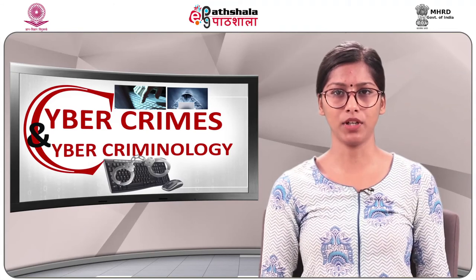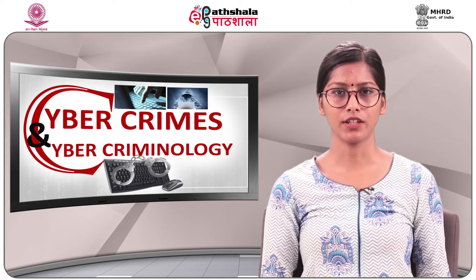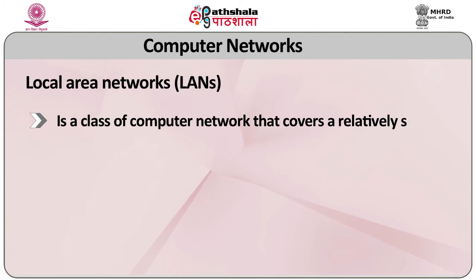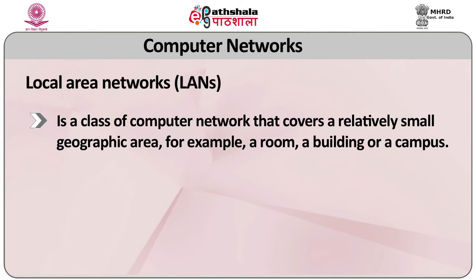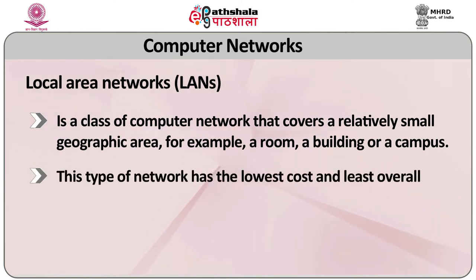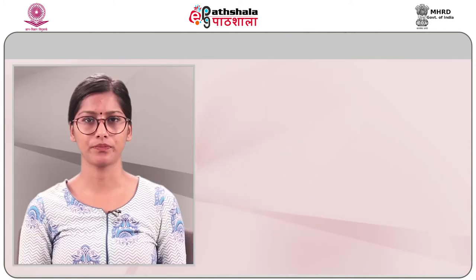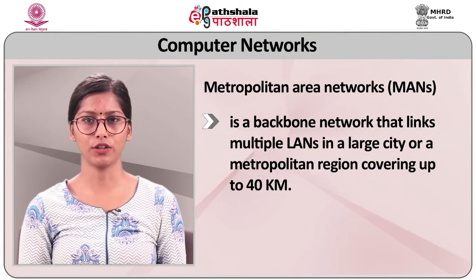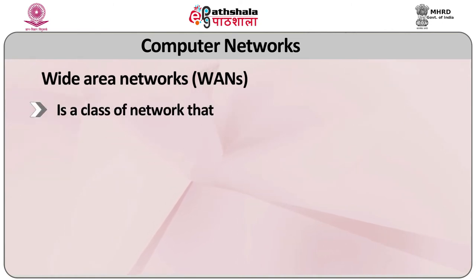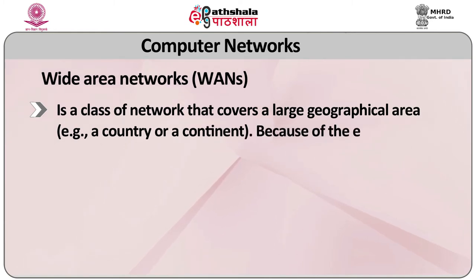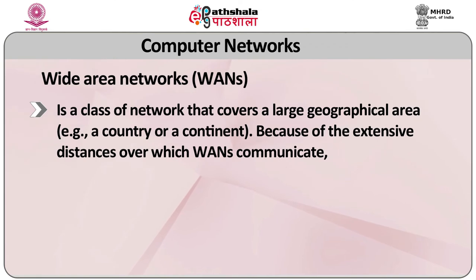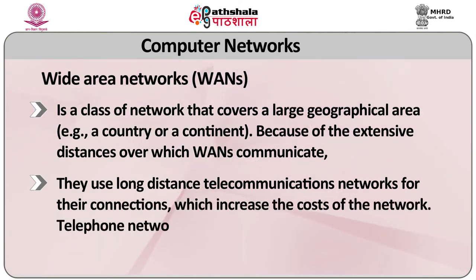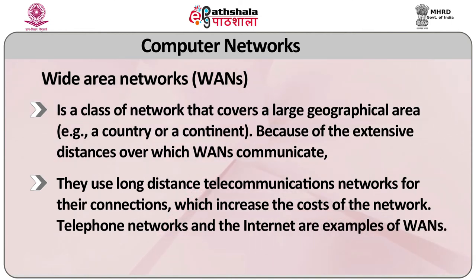The fundamental differences among LANs, MANs, and WANs are distance coverage, transmission speed, media, and error rate. A LAN covers a relatively small geographic area such as a room, a building, or a campus, and has the lowest cost and least overall capability. A MAN is a backbone network that links multiple LANs in a city or metropolitan region, covering up to 40 km. A WAN covers a large geographical area such as a country or a continent and uses long-distance telecommunications networks for connections, which increases the cost. Telephone networks and the Internet are examples of WANs.